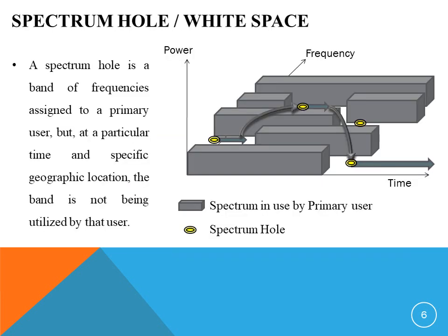Spectrum hole is a licensed frequency band which is allocated to the primary user, but is not being utilized for a particular time period in a specific geographic location, where a secondary user can access it without interfering with the primary user. It is simply detecting whether the primary user is present or not in the allocated spectrum. The other name for spectrum hole is white space. The process of identifying the spectrum hole is called spectrum sensing.